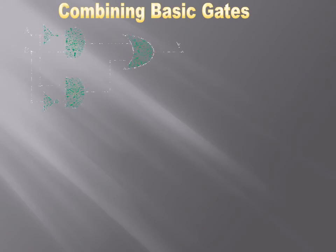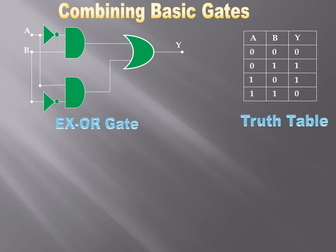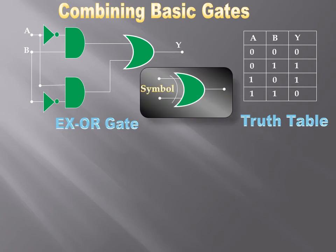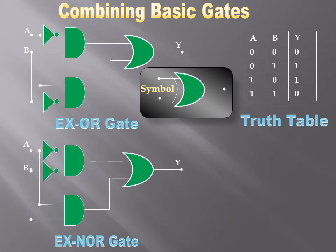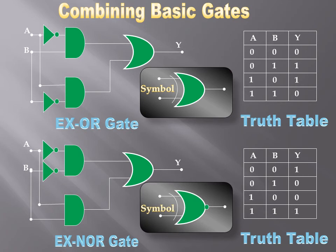Continuing with combining basic gates: you can combine basic gates to form an exclusive OR (XOR) gate. The XOR truth table is very close to the OR gate but differs at one place — when both inputs are 1, the output is 0. This gate performs 1-bit addition: if A is one bit and B is the other, it performs a perfect 1-bit addition. The symbol is shown. The NOT of the same gate is known as the exclusive NOR (XNOR) gate, with its own truth table and symbol. These two gates have only two inputs.